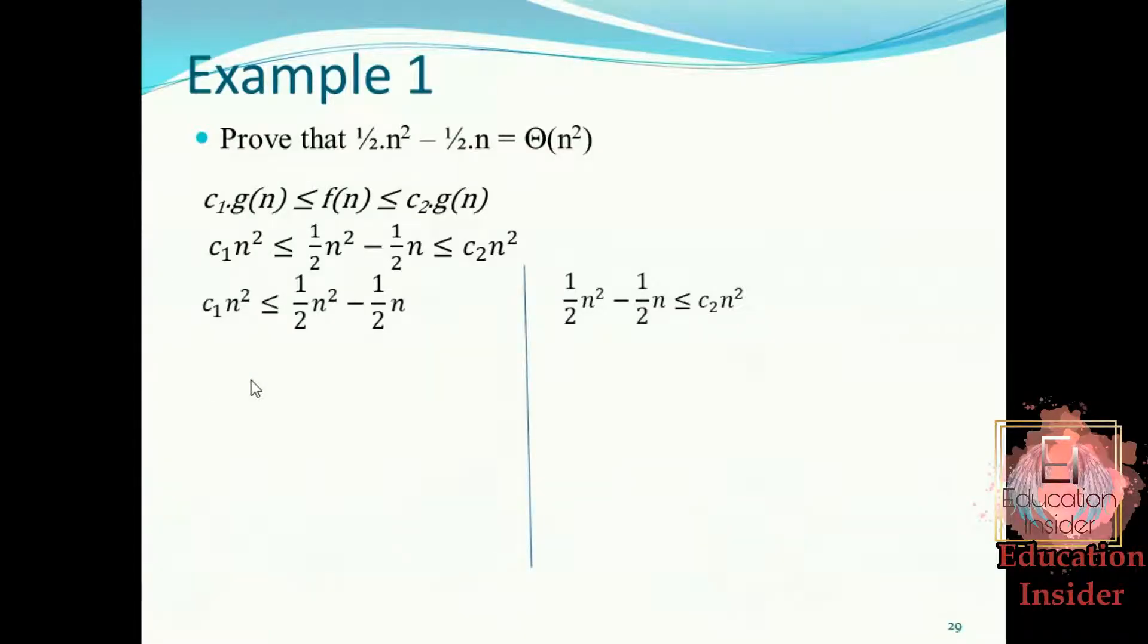Now let's begin with left side. Here, if you notice, we need to prove c₁n² must be less than or equal to this whole ½n² - ½n. But on the right side, something is subtracting from ½n², so we must need to prove that this thing is greater, so that the right side must become larger than this c₁n².